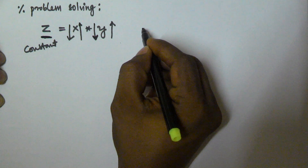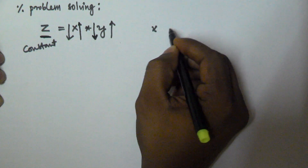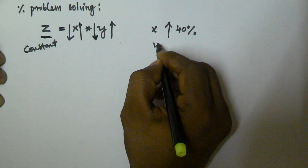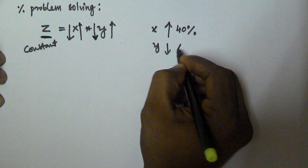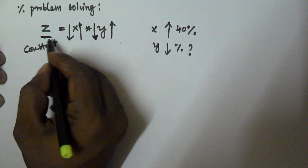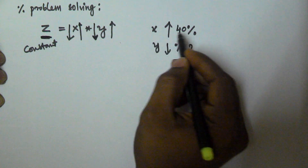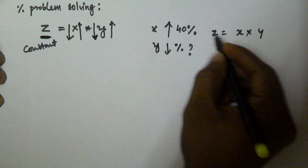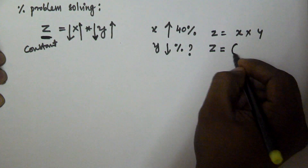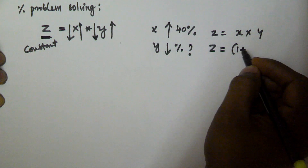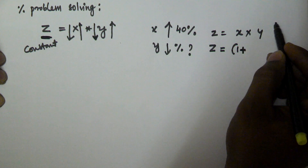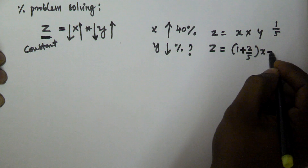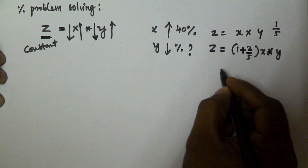For example, if x is increased by 40 percent, what percentage must y decrease to keep z constant? We have z = x × y, and x is increased by 40 percent. Now, 40 percent is equivalent to 2/5, so the new x becomes x + (2/5)x = (7/5)x.